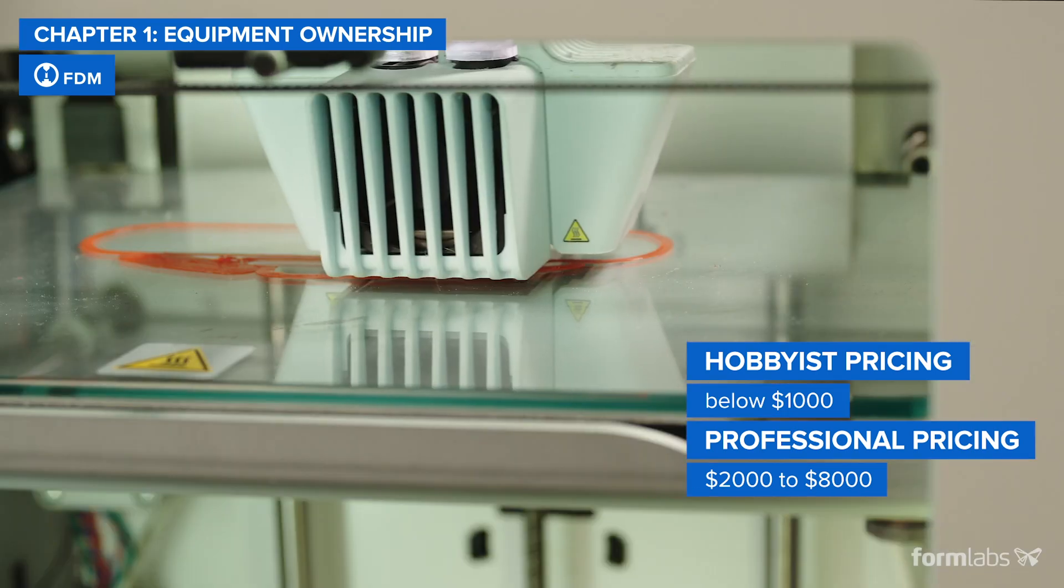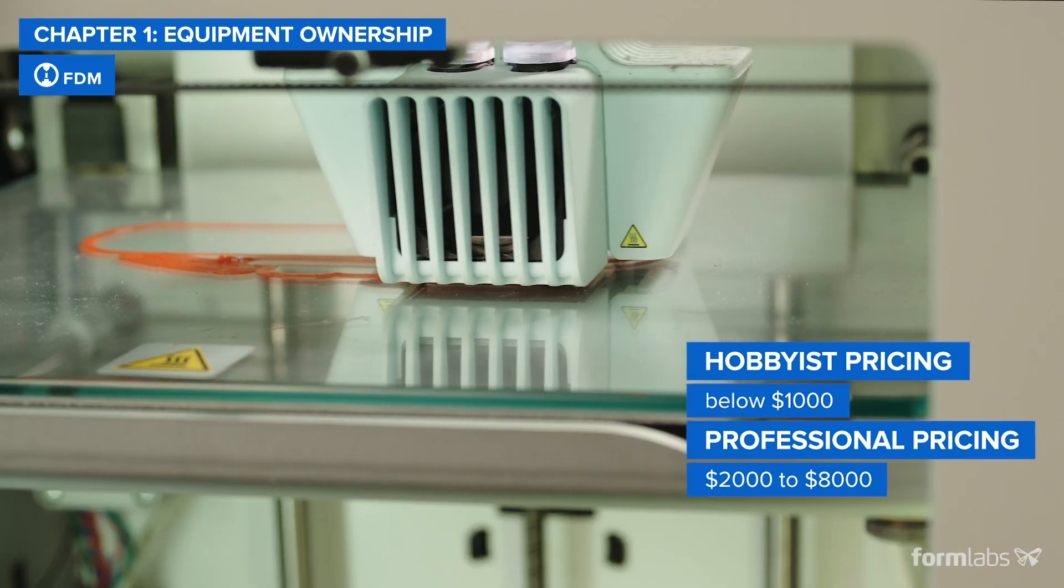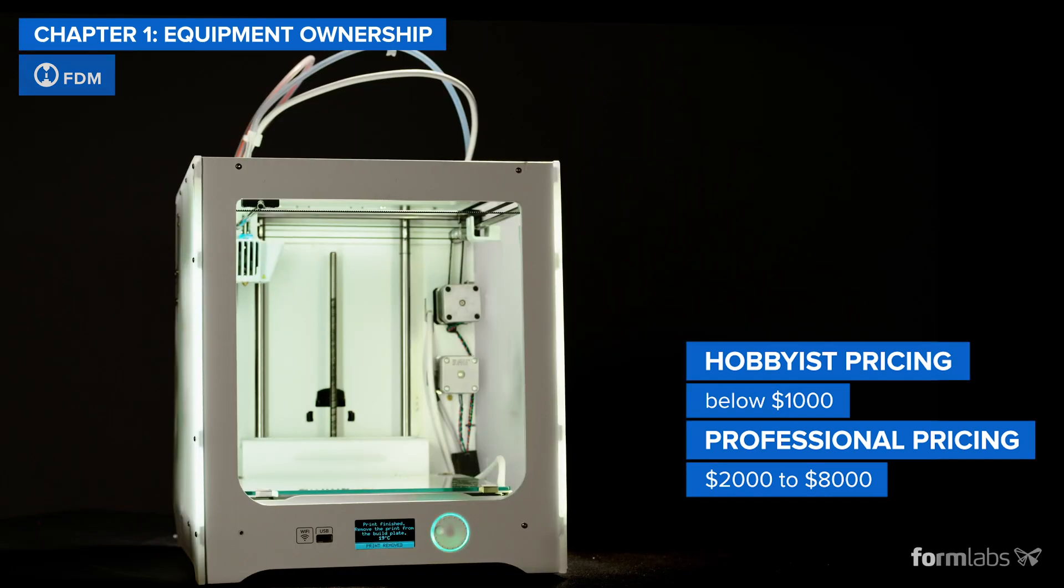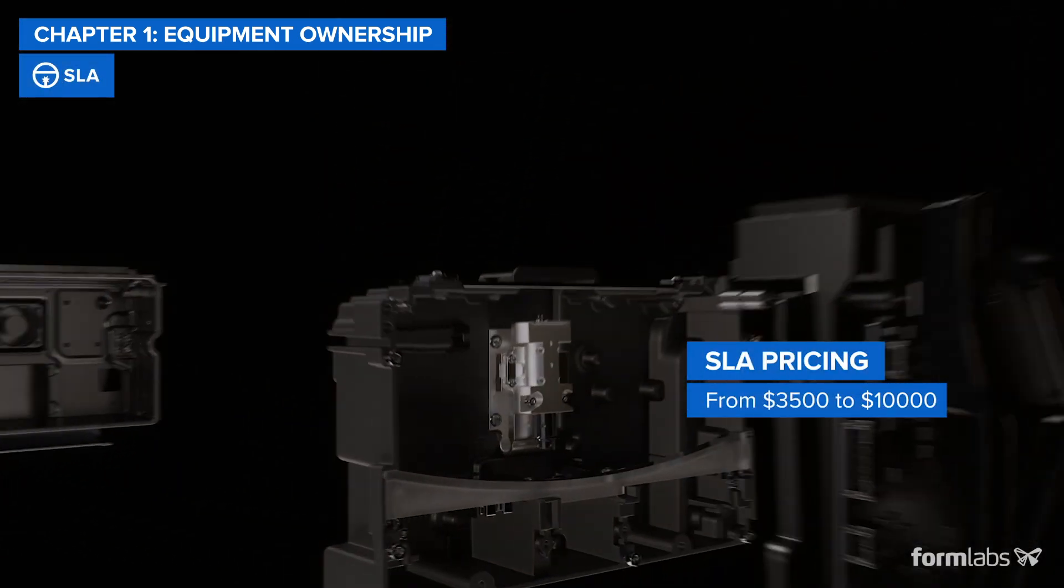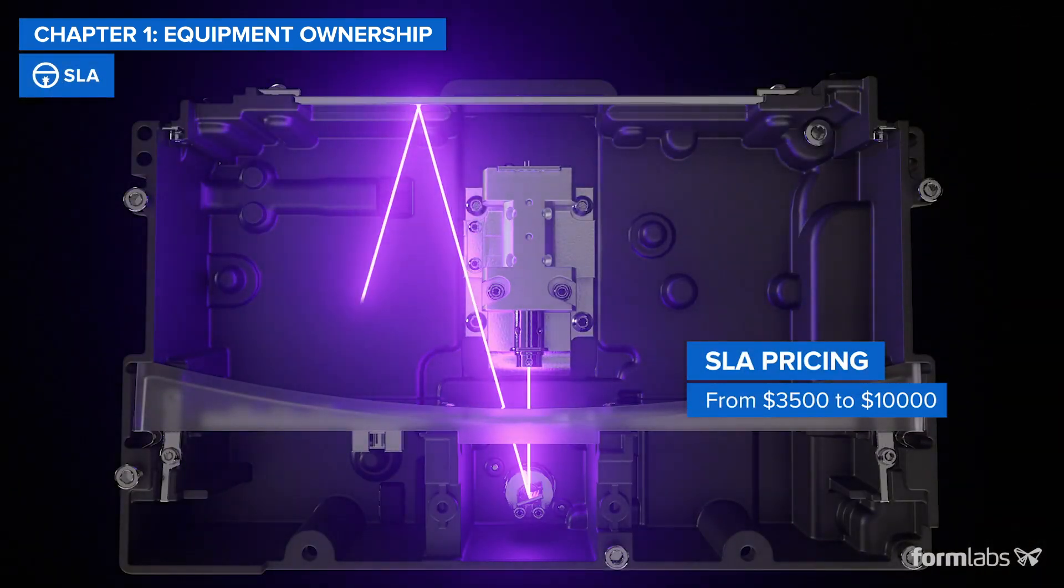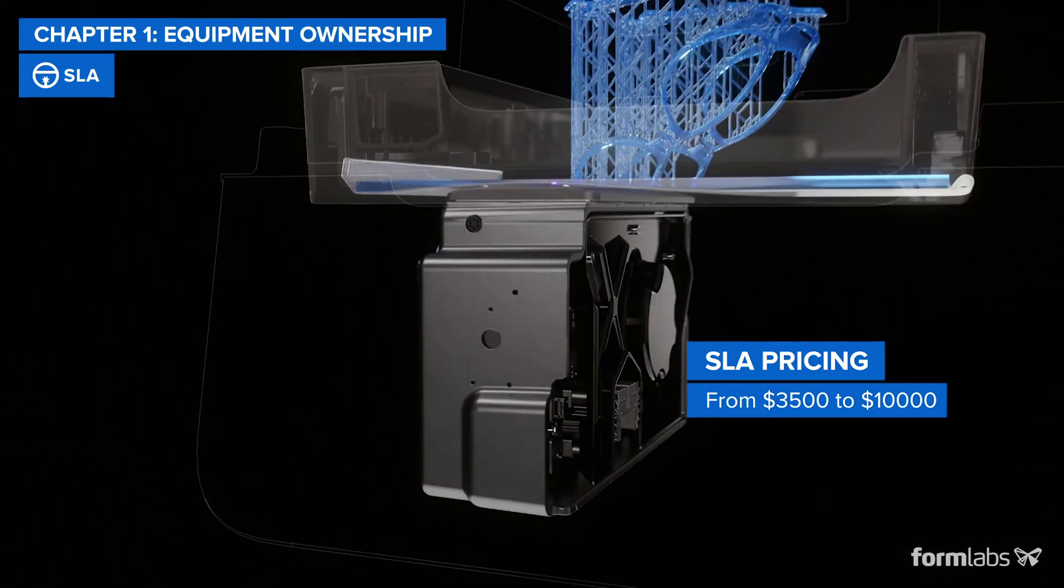Generally, FDM 3D printers offer the lowest entry cost to 3D printing. SLA 3D printers offer higher accuracy and a much smoother surface finish at the lowest cost, but generally carry a marginally higher price tag.